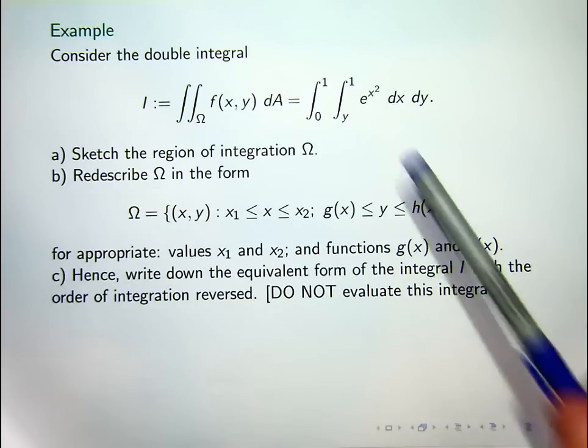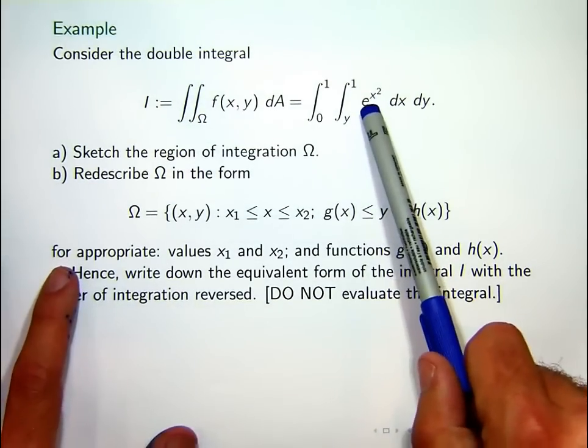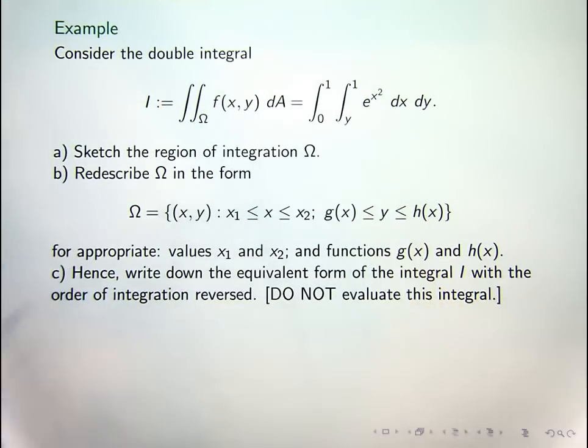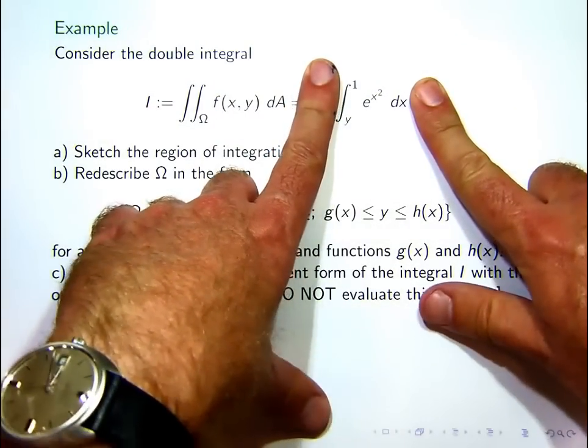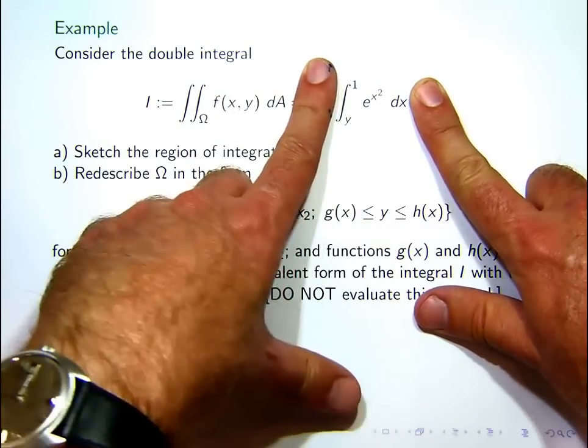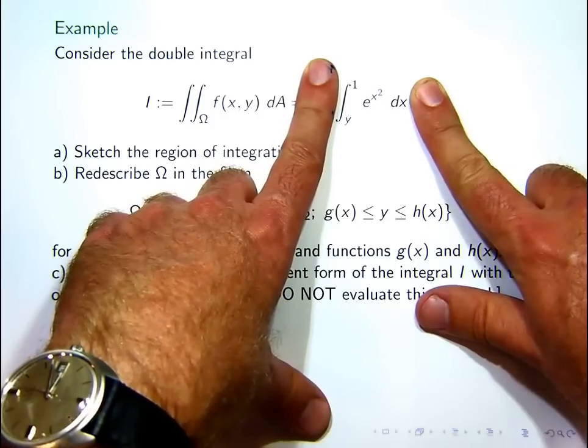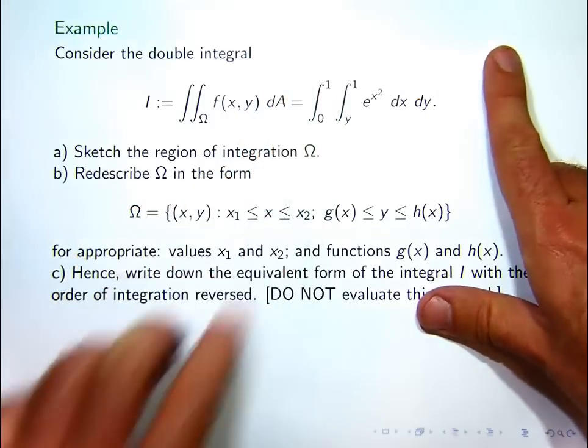Now you can see here that the integrand, the function that we're integrating, is only a function of one variable. Now what's the problem with just doing what we usually do and integrating the inside integral first, with respect to x, and then moving to the outside integral?